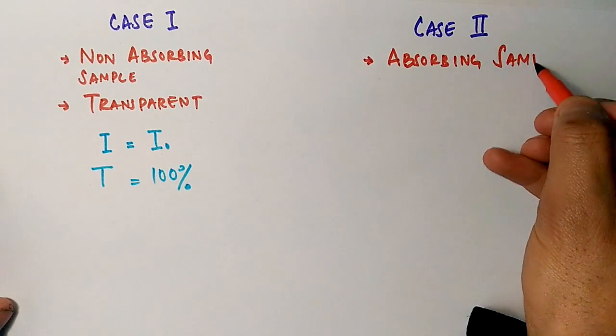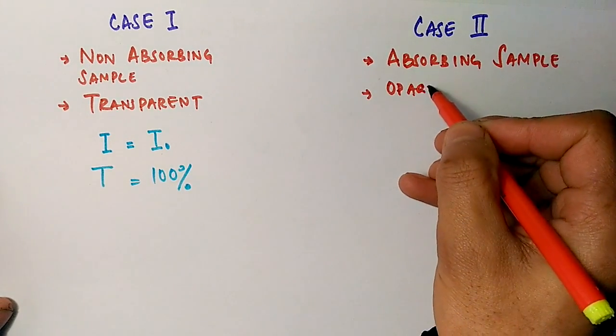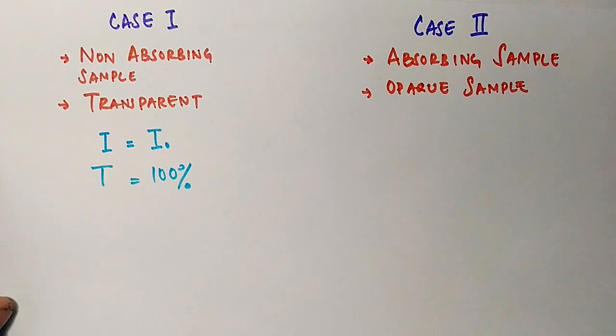On the other hand, we have opaque sample in which the light cannot travel at all, so we get zero percent transmission here.